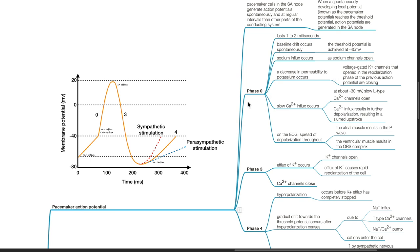Phase 0 lasts 1–2 ms. Baseline drift occurs spontaneously; the threshold potential is achieved at negative 40 mV. Sodium influx occurs as sodium channels open. A decrease in permeability to potassium occurs as voltage-gated potassium channels that opened in the repolarization phase of the previous action potential are closing. Slow calcium influx occurs at about negative 30 mV as slow L-type calcium channels open, resulting in further depolarization and a slurred upstroke.